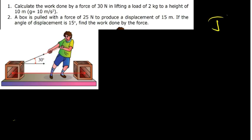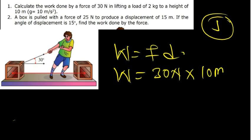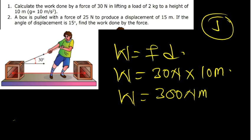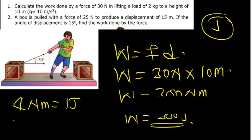Work is measured in joules, and it is the product of force times displacement. From the question, we have our 30 Newton as the force and the displacement is 10 meters. So 300 Newton-meter is going to be our work. Now, 1 Newton-meter is equal to 1 joule, therefore work is 300 joules. That is question 1.